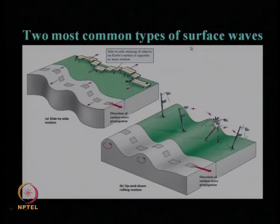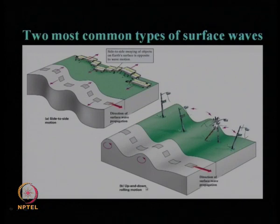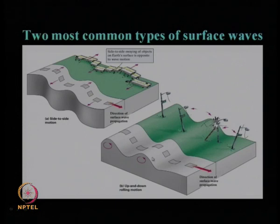For the surface wave, we have seen two most common behaviors. One is side-to-side motion, and another one is an up-and-down rolling motion. These two waves we have identified: the first as the Love wave type surface wave, and the second as the Rayleigh type surface wave.